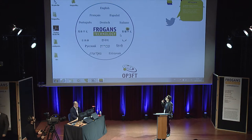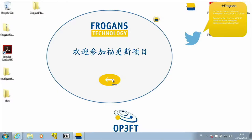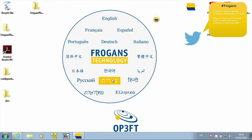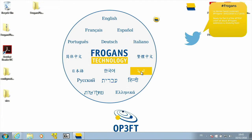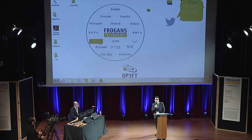In a Frogan's site, it's possible to manage different fonts and writing styles, and this is a perfect example, because you have 15 different languages available in this Frogan's site, and these are the same FSDL documents.